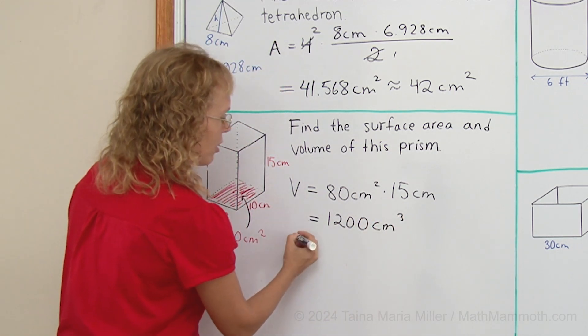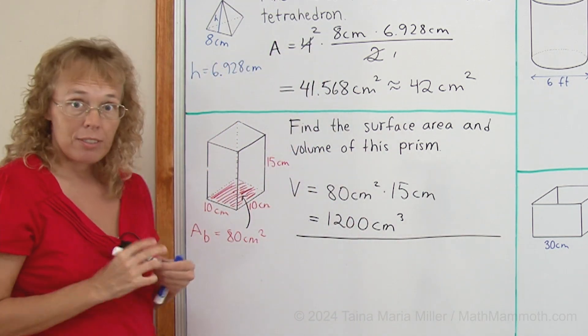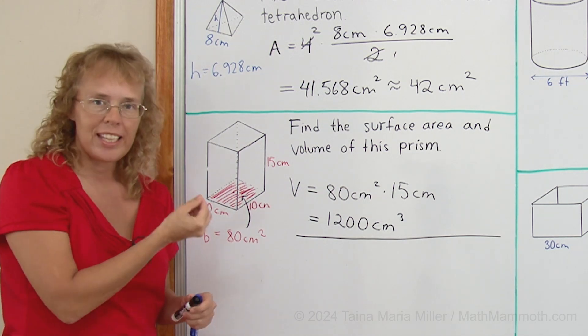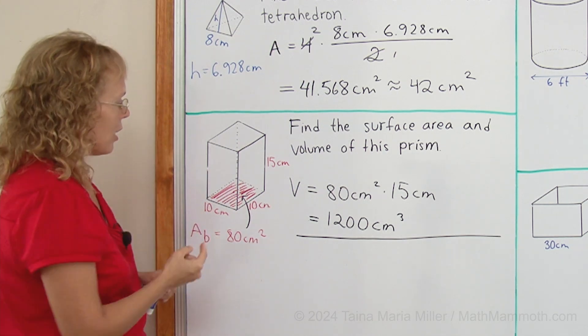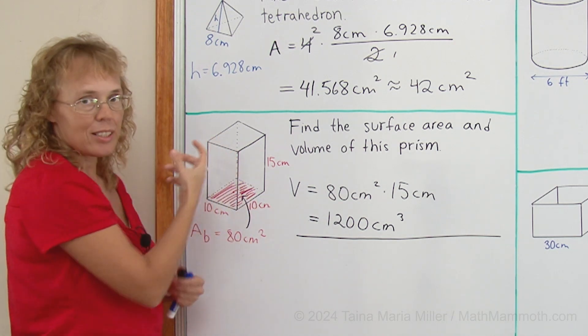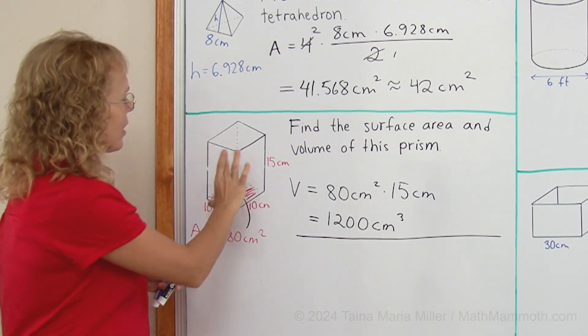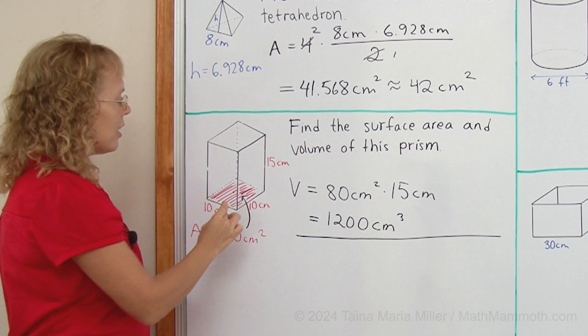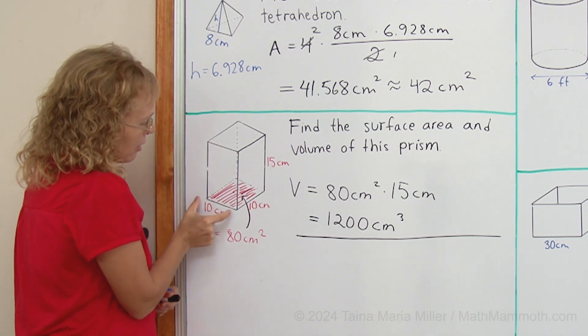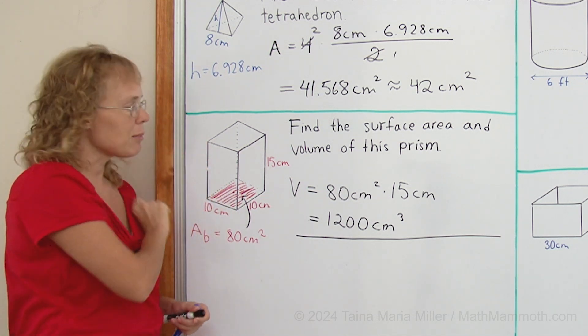And now the surface area. Okay, for the surface area, I need to calculate the area of each face and then add all of those. So there's a bottom, we know its area. The top would be identical. Its area is also 80 square centimeters. And then these side faces here, each one of them is a rectangle. And so as rectangles, there's 10 centimeters times the height, the 15 centimeters.